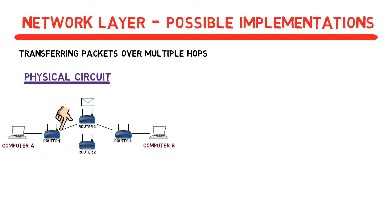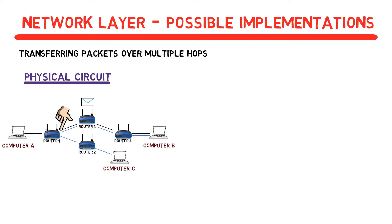Each router can handle multiple connections of course, but each connection will be handled over different physical cables. For example, router 1 may have one connection from computer A to computer B via router 3, and another from computer C to computer B via router 2. There will be no difficulty in distinguishing these connections. When router 1 receives a packet from a specific port, it knows that it belongs to the connection from computer A to computer B, as this port is allocated specifically for this connection.